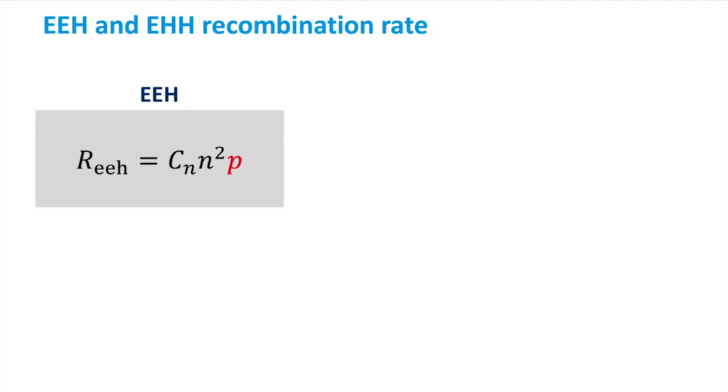The concentration of holes, P, is also important due to the fact that one hole is necessary for Auger recombination to take place.